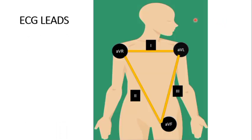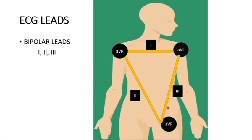There are bipolar leads — Lead 1, 2, and 3. Bipolar means two poles: Lead 1 has poles AVR and AVL; Lead 2 has poles AVR and AVF; Lead 3 has poles AVL and AVF. These are just the potential difference of two leads, so they are called bipolar leads. All other leads are unipolar leads.